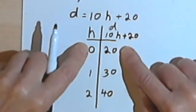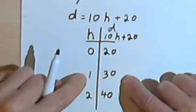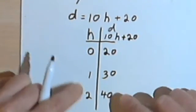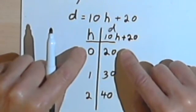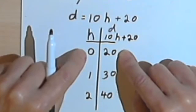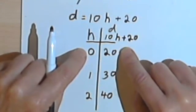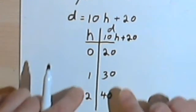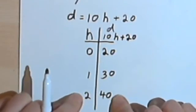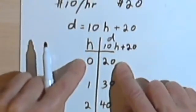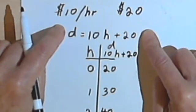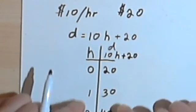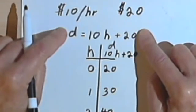Each of these pairs of numbers, the 0, 20, 1 and 30, 2 and 40, is an ordered pair. In other words, we have to keep these numbers together, because the 0 only makes sense with the 20, the 1 makes sense with the 30, the 2 makes sense with the 40. Each of these pairs of numbers is a possible solution to this equation, or we could say that each of these pairs of numbers satisfies this equation.